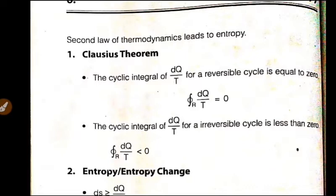So this is the reversible process. This is the integral of DQ by T is less than zero. This is the irreversible cycle.